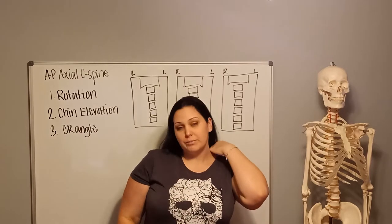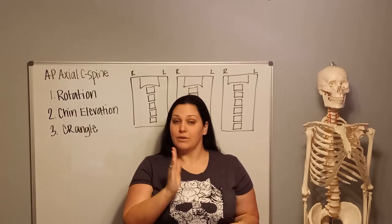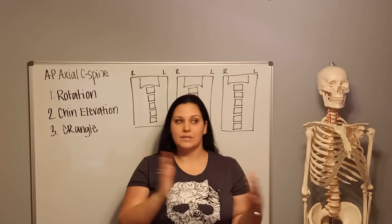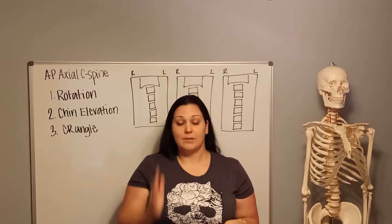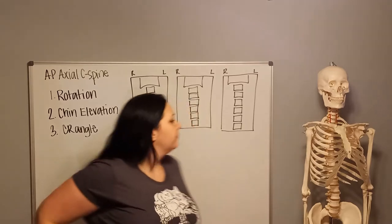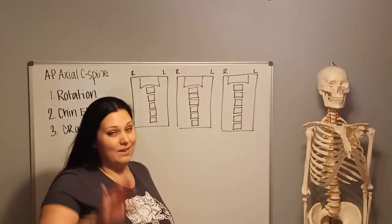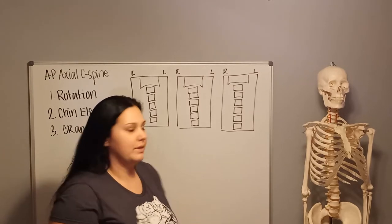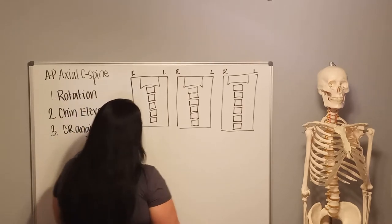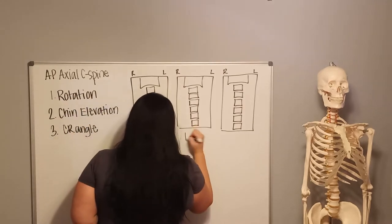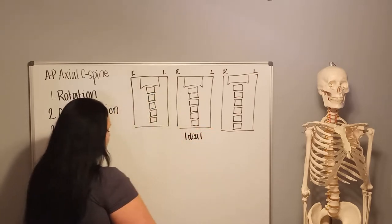This is important because after you take your image, if the spinous process isn't in the center of your vertebrae, you can tell by which side it's rotated to which way you need to adjust your patient to get them into true AP. Let me draw this out — apologies, I'm not an artist. This middle picture we're going to call ideal, meaning everything is set up appropriately.